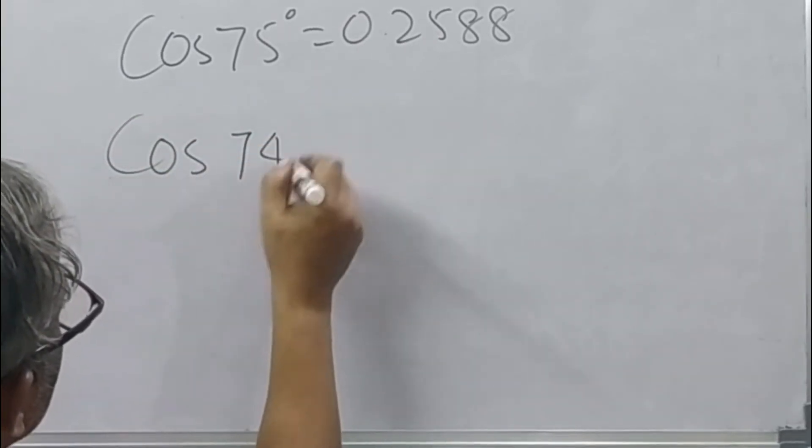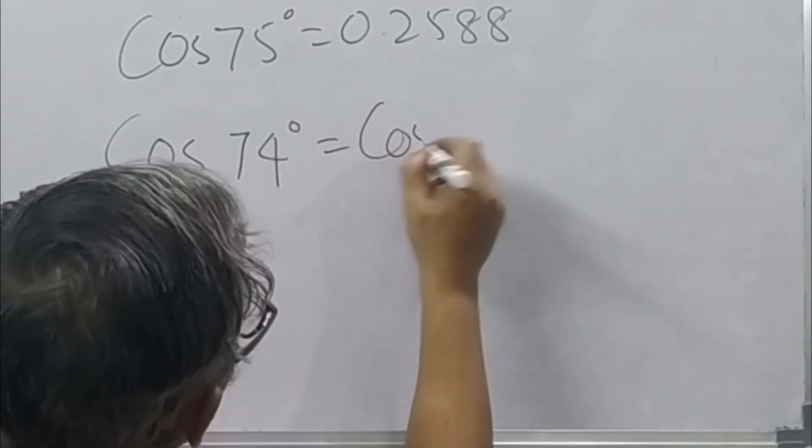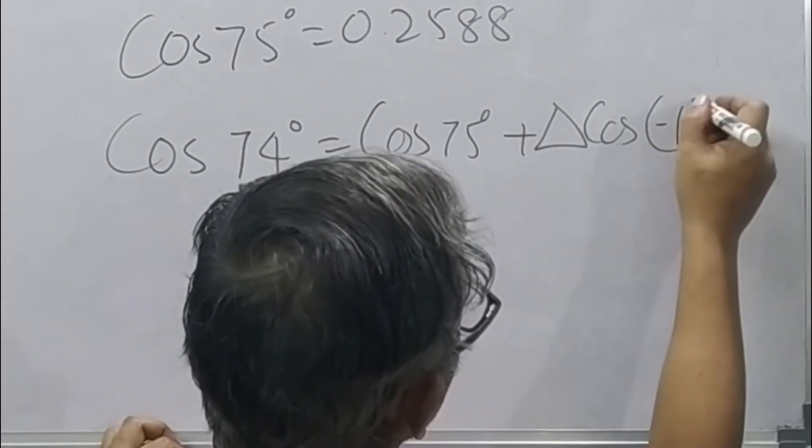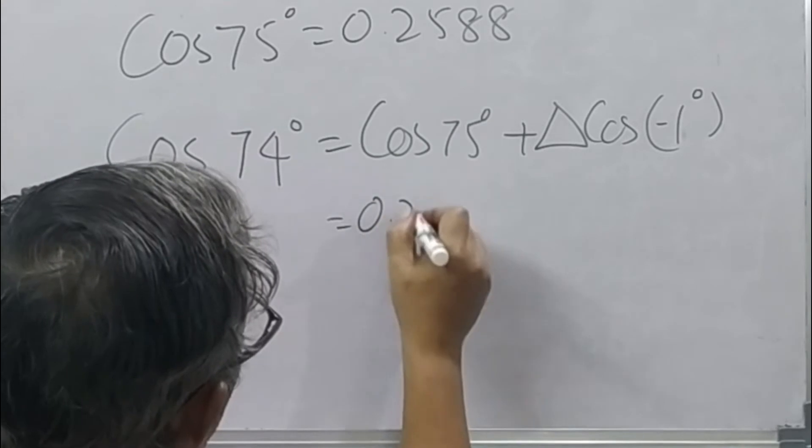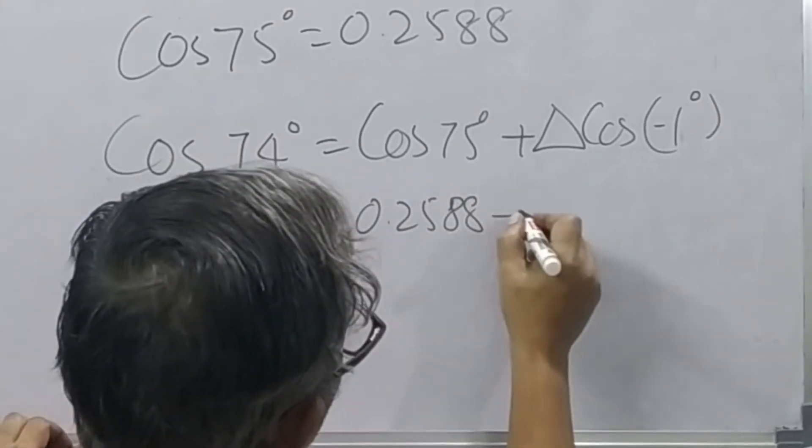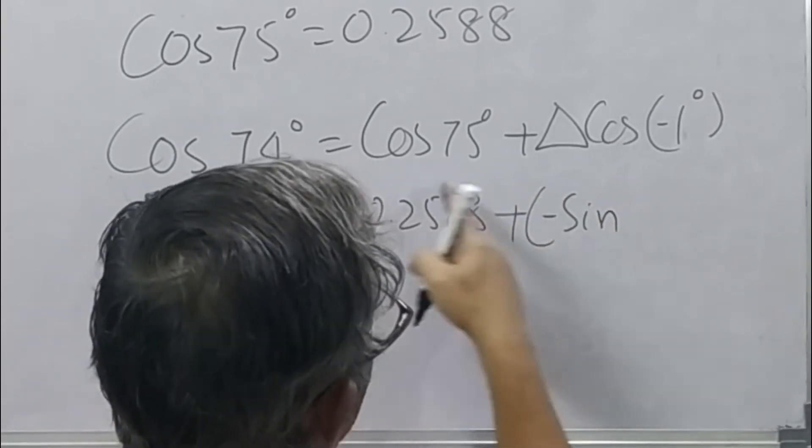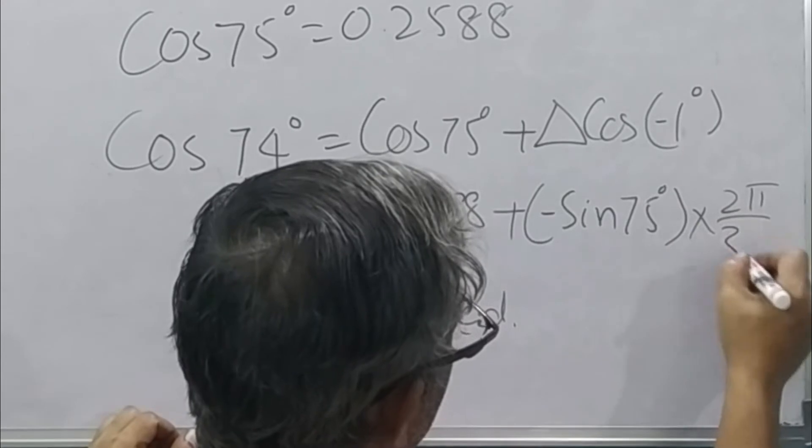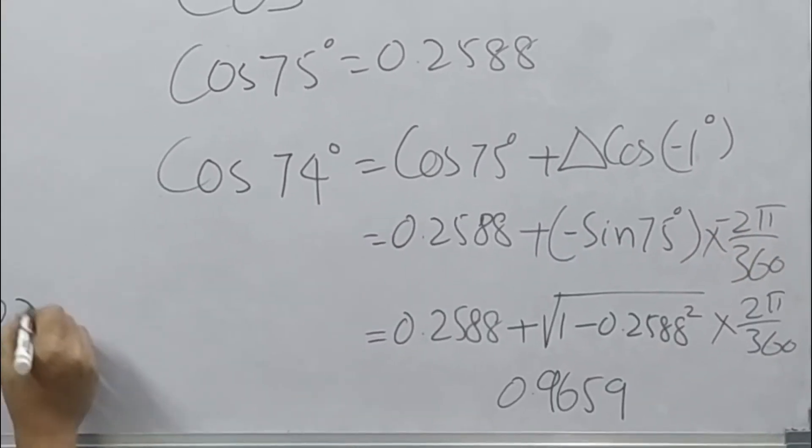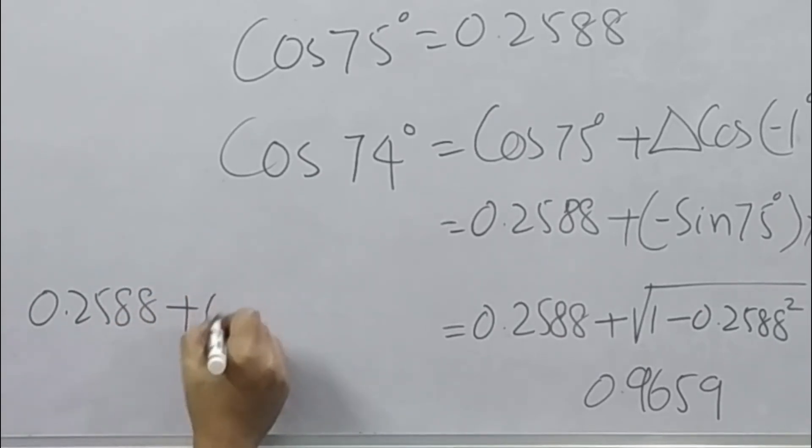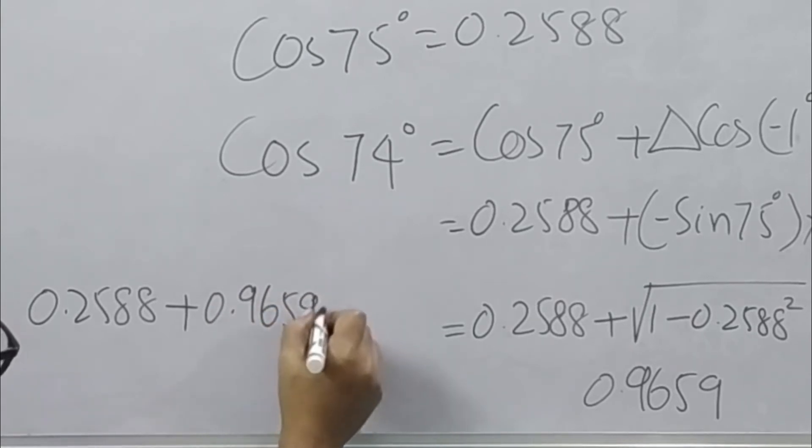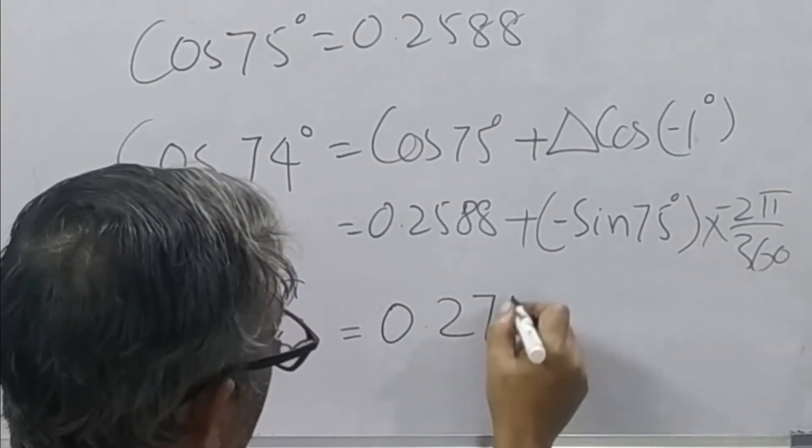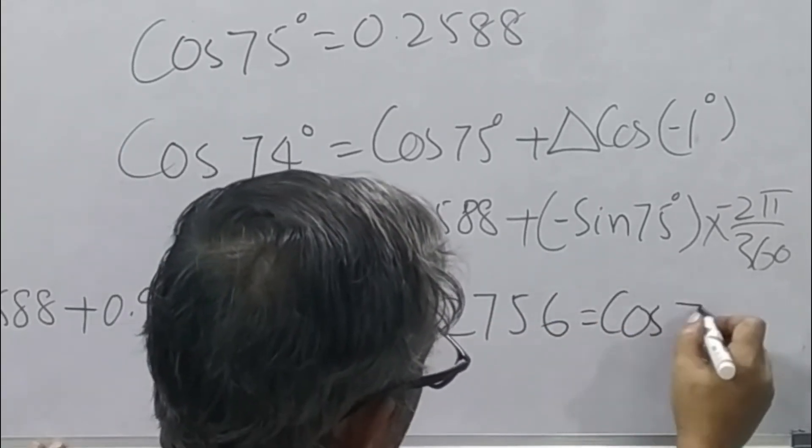So we have to write down the value of cos of 74 degrees would be equal to cos of 75 degrees plus change in cos function due to minus 1 degree. Cos of 75 which is 0.2588 plus 0.0174, so it comes out to be 0.2756 for cos 74 degrees.